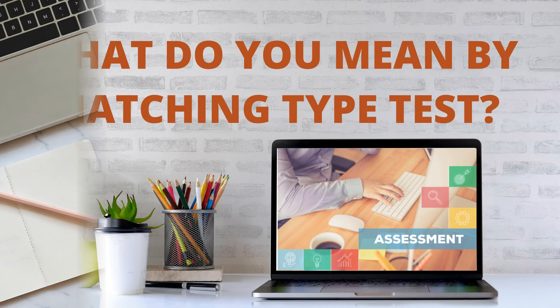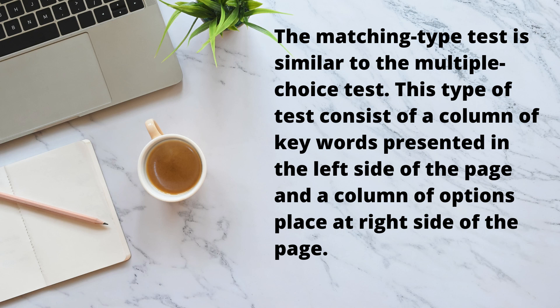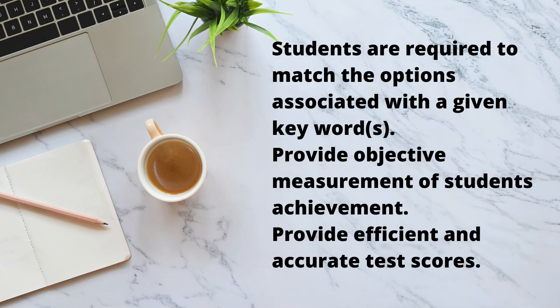What do you mean by Matching Type Test? The Matching Type Test is similar to the Multiple Choice Test. This type of test consists of a column of keywords presented on the left side of the page and a column of options placed at the right side. It may be considered as modified Multiple Choice items where the choices progressively reduce as one successfully matches items on the left with items on the right. Students are required to match the options associated with a given keyword, and it provides objective measurement of students' achievement as well as efficient and accurate test scores.